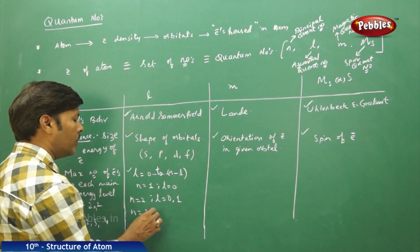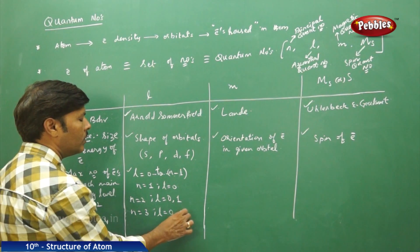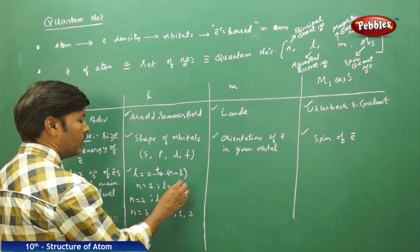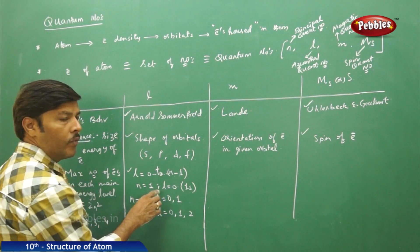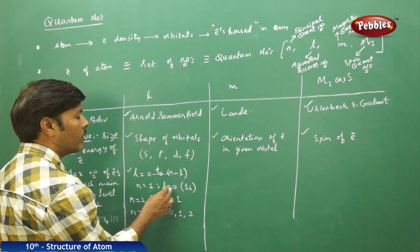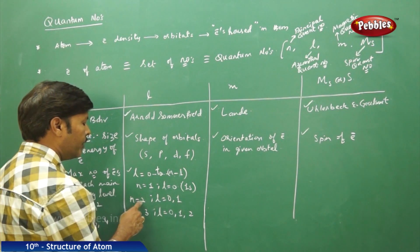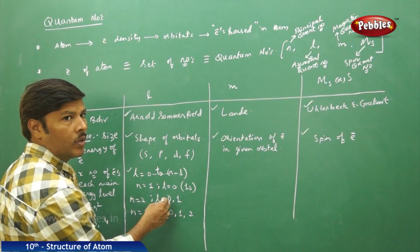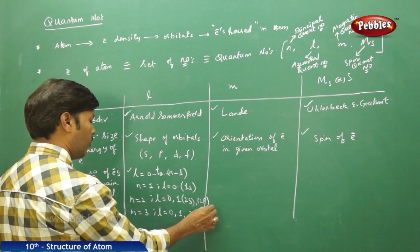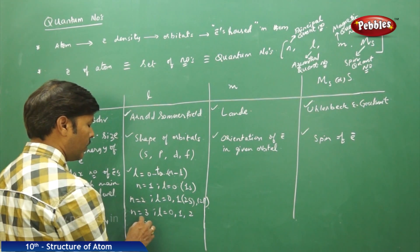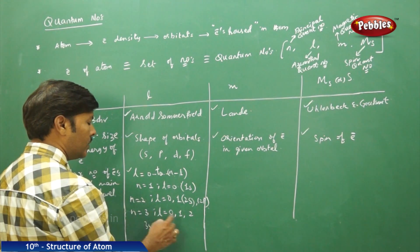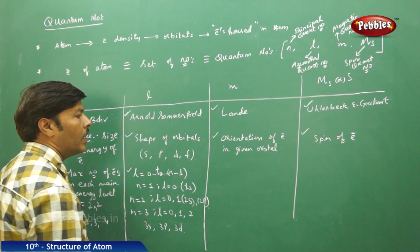Similarly, if n equals 3, then l can have the values 0, 1, and 2. The orbital is formed with the combination of both principal quantum number and azimuthal quantum number. When n is 1 and l is 0, the orbital is 1s. When n is 2 and l is 0 and 1, the orbitals are 2s and 2p. When n is 3, l equals 0 gives 3s, l equals 1 gives 3p, and l equals 2 gives 3d orbital, and so on.